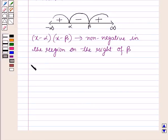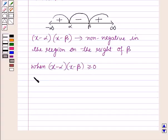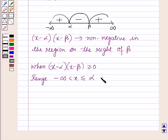Now when (x - α)(x - β) is greater than or equal to zero, then the required range will be: minus infinity < x ≤ α, or β ≤ x < infinity. This means that (x - α)(x - β) is positive in these regions.